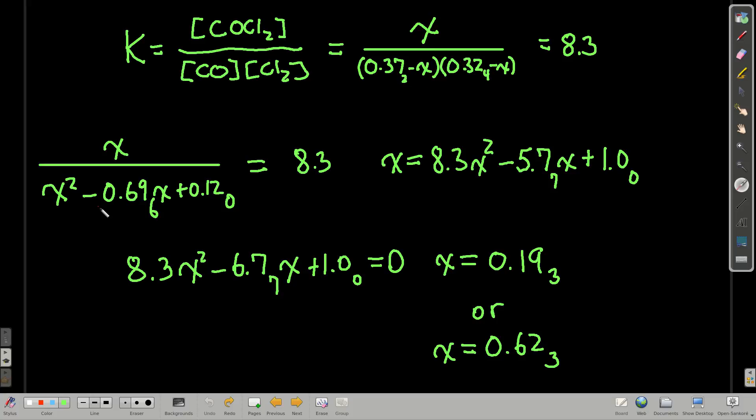Now we get a quadratic formula equation on the bottom. So, you know, FOIL, multiply it out, get this. Then we multiply it through times, you know, this times 8.3, we get this. So X is equal to 8.3X squared minus all this stuff. And then when we subtract X from both sides, we get this.